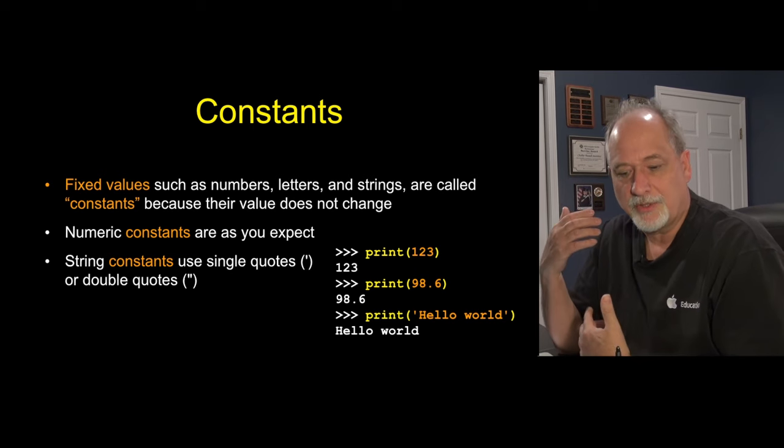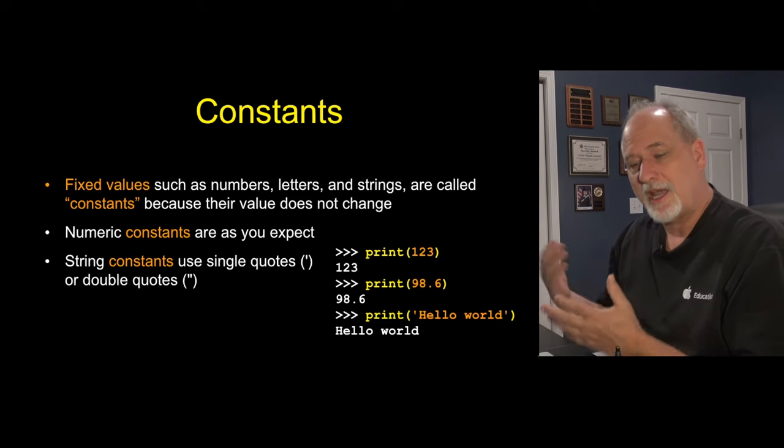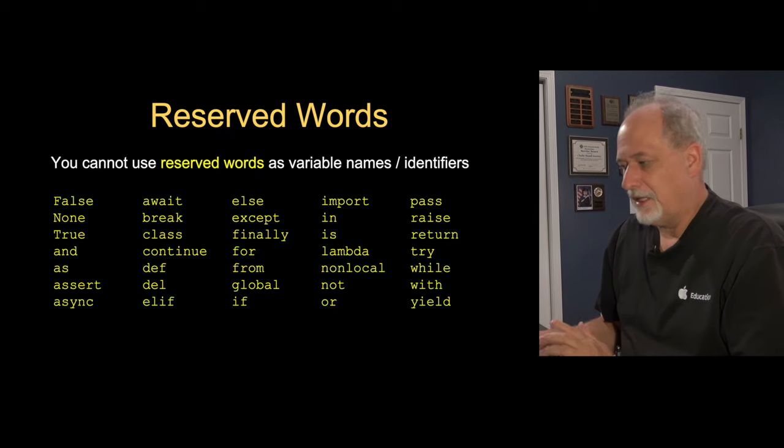So print(123) prints out 123, print(98.6) prints it out. So these are just really the syntax of constants and without constants we can't write really much of anything.